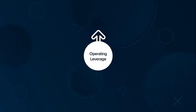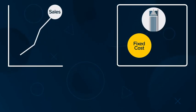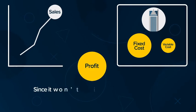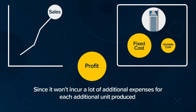Having a high operating leverage amplifies profits. If sales increase drastically, a company with more fixed costs than variable costs will see much greater profit since it won't incur a lot of additional expenses for each additional unit produced.